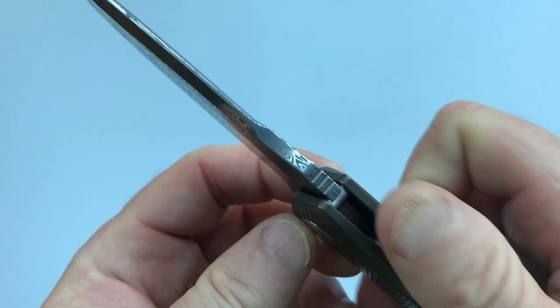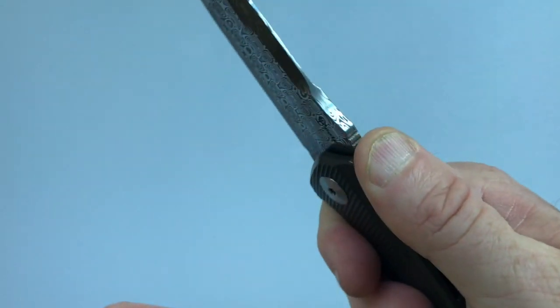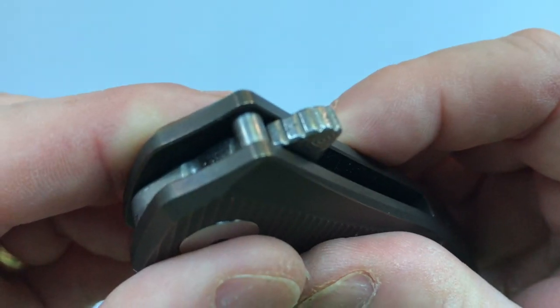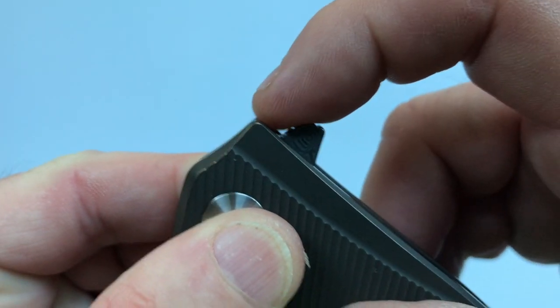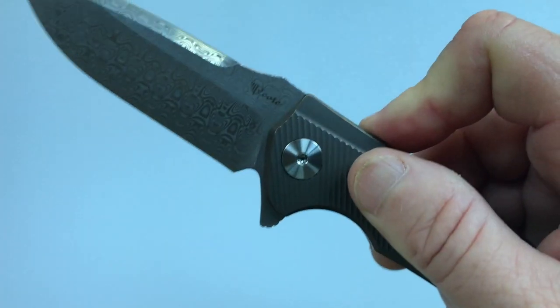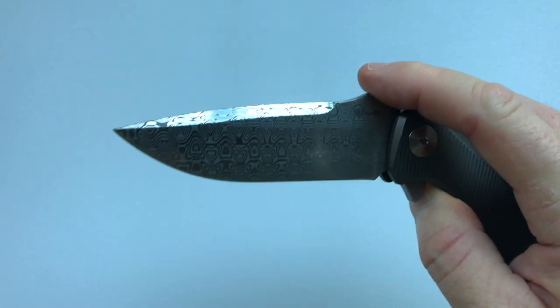The proximal aspect of the knife has some jimping which gives you good purchase. The method of deployment is by flipper. As you can see, there is some jimping on the flipper and it is rounded so you can choose whatever angle you want, and it flips out nicely.